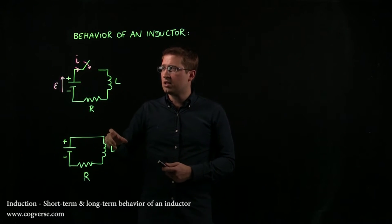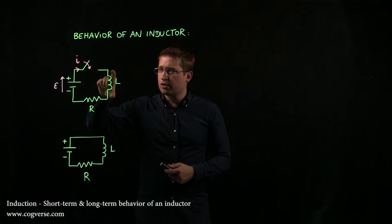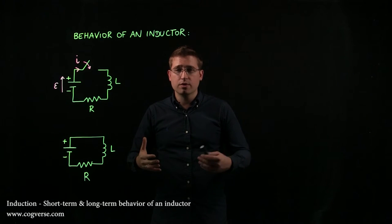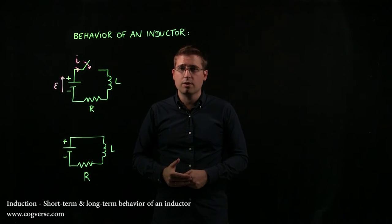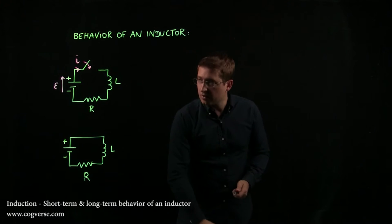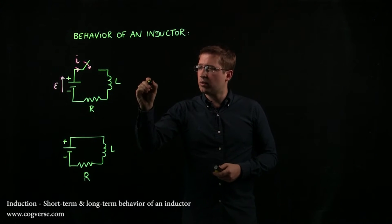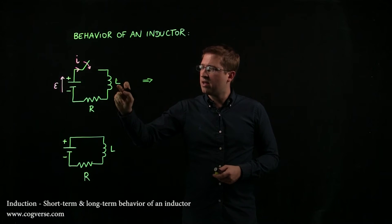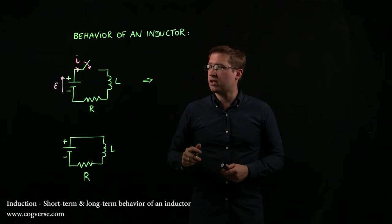And it's going to be such that the voltage across it is equal to epsilon, so that it exactly opposes the current, and at t equals zero there is no current. In other words, at t equals zero the inductor behaves like an open switch.